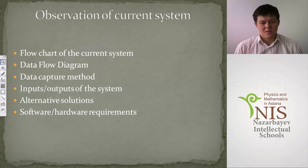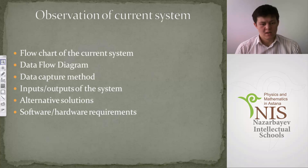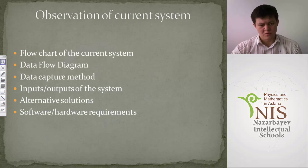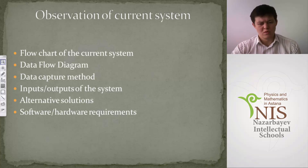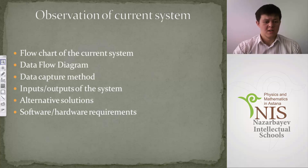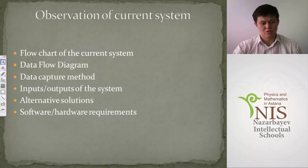Next is the data capture method — how data is taken and where it's saved. Then inputs and outputs of the system: students need to give evidence — screenshots, writings, or photos of the inputs and outputs of the system that currently works. Students also need to discuss alternative solutions, how they can solve the problem in different ways — not only one specific way, but several. Finally, software and hardware requirements: once you have identified your chosen solution, you need to select the software packages and hardware required to finish the project.